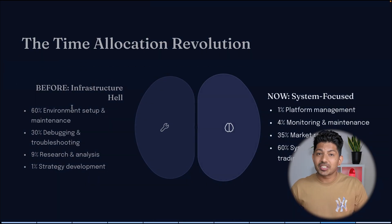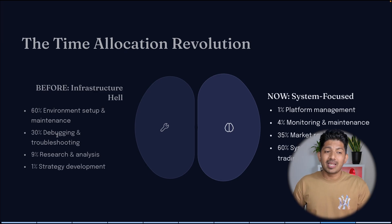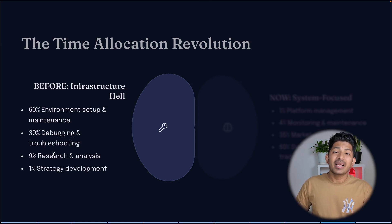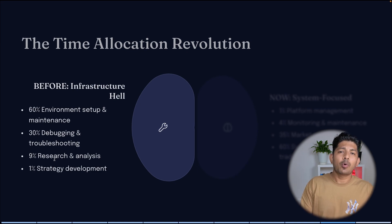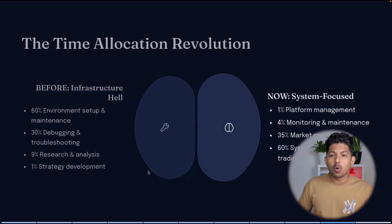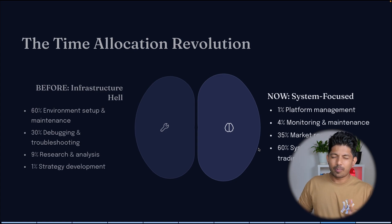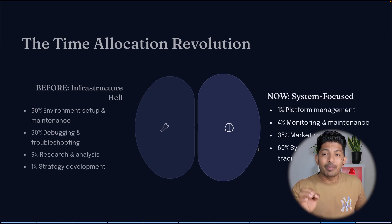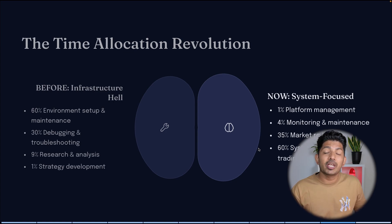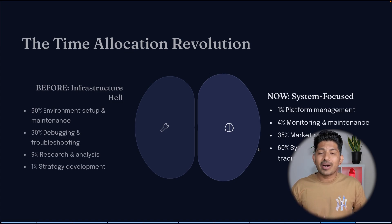Before, in the infrastructure hell, beginners spent 60% of their time on environment setup and maintenance, 30% on debugging and troubleshooting, 9% on research and analysis, and only 1% on strategy development. But now it's just 1% on platform management, approximately 4% on monitoring and maintenance, 35% on market research, and a huge 60% on system architecture and trading logic — which means you can focus much more on your real trading strategy.